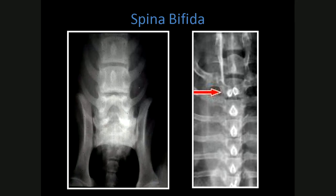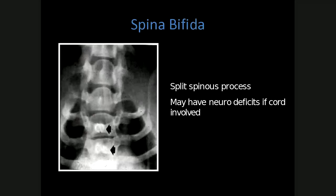Spina bifida refers to failure of the dorsal portion of the vertebra to form — either the lamina or the dorsal spinous processes. On the left-hand side there's an obvious radiolucent defect in the last lumbar vertebra extending into the sacrum, and on the right there's cleavage of the dorsal spinous process — it looks like there are two next to each other. It typically occurs in brachycephalic breeds and also in the Manx cat. Neurological deficits may occur if the spinal cord is involved, and sometimes the meninges with or without the spinal cord can protrude through these defects.